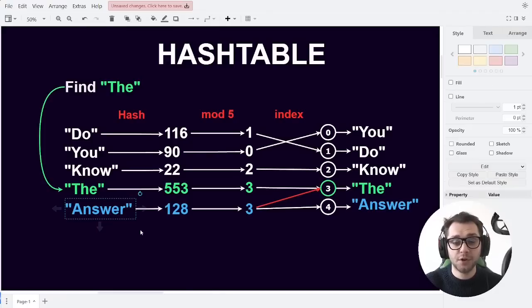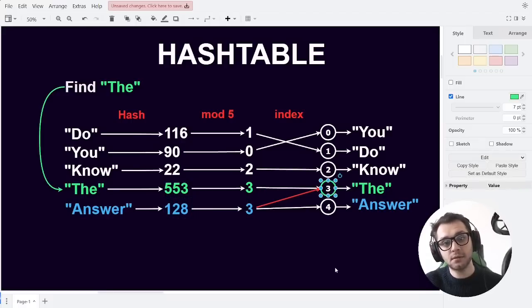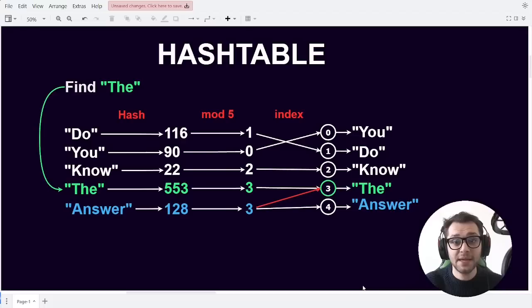Now when we would want to find the word "answer" we would compute the hash of the word "answer". Realize that it's 3. We check index 3. We'd confirm the fact that index 3 does not contain the word we're looking for. So instead we hop one index down. Hopping one index down we see that the word "answer" is now there and thus we found it. You can imagine that both linear probing and chaining have an impact on the performance of the hash table.